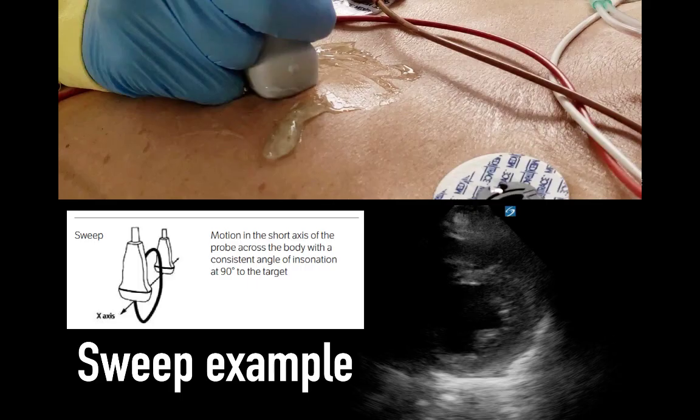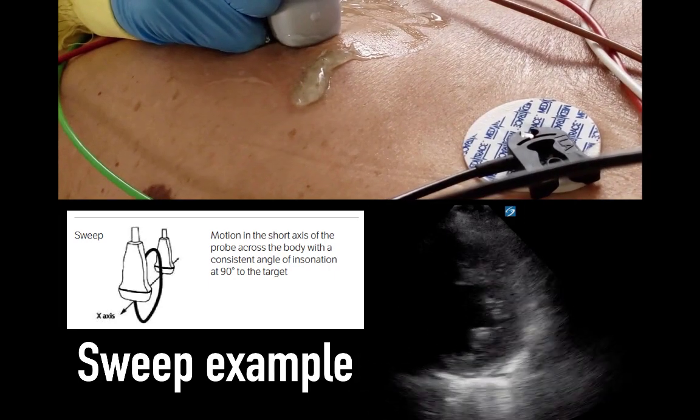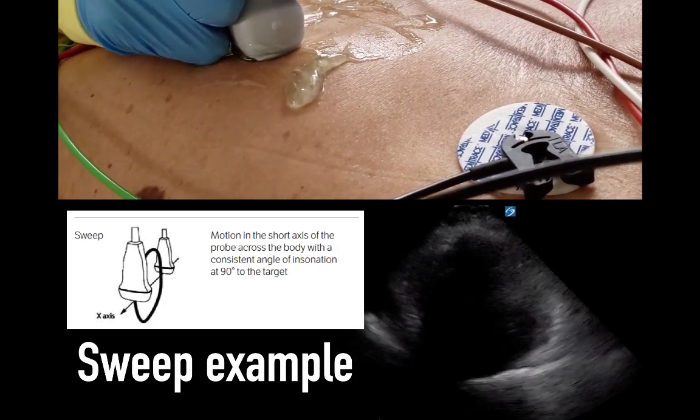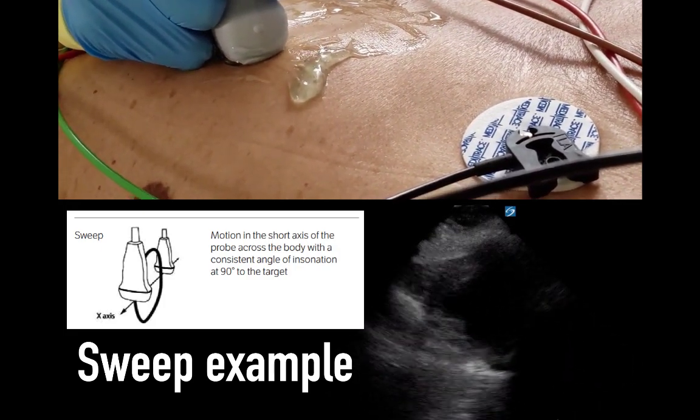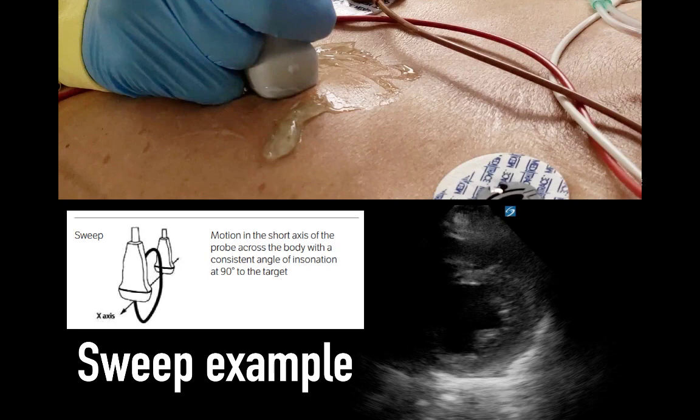Here is an example where we've acquired a parasternal short axis. In this case, the examiner will move medial to lateral, and you will see a transition from the base of the heart, near the mitral valve, to the apex as it sweeps laterally.